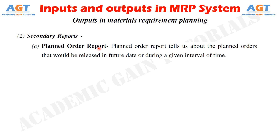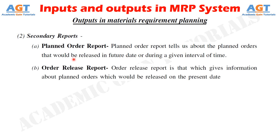For instance, if April is the current month and the finance manager wants to see what quantities of raw material have to be made available in May, this report helps him prepare an estimate of the amount of funds required in May for making payments to suppliers.